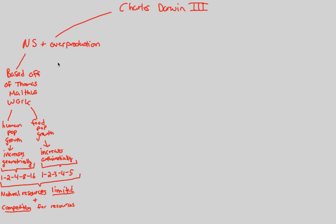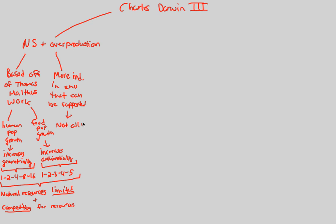Darwin comes into this because of the idea of overproduction. Based off of what he read in Thomas Malthus, Darwin believed that more individuals are in an environment than can possibly be supported by it. The environment cannot support every single individual, and that means not all individuals will survive and reproduce. This is critical — not all individuals survive and reproduce.